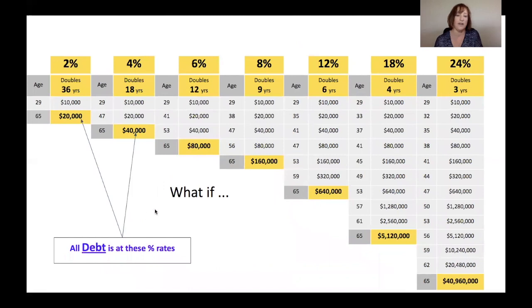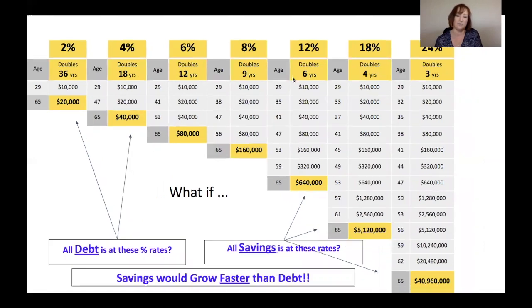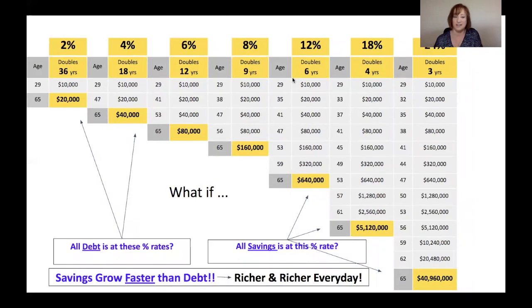What if all your debt was over here? And all your savings was way over here. Your savings would grow faster than your debt. You'd be richer and richer every day, doing nothing.